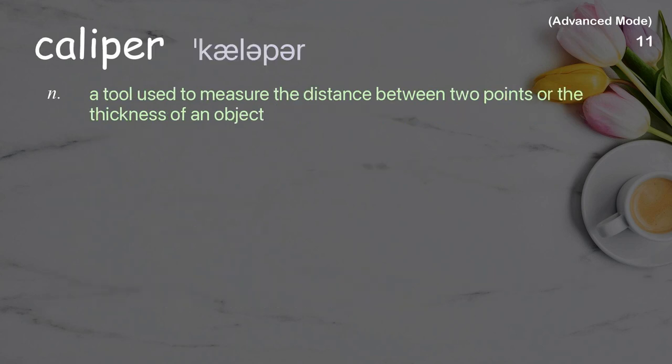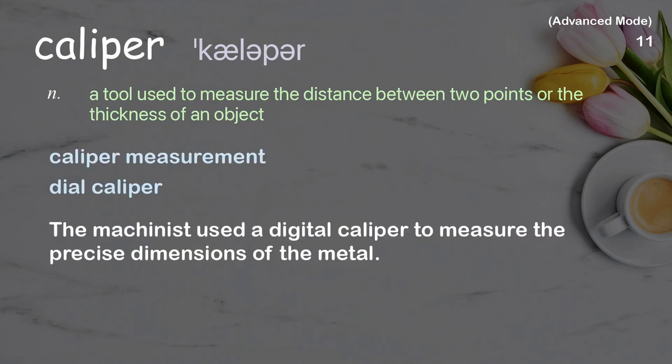Caliper: A tool used to measure the distance between two points or the thickness of an object. Examples: Caliper measurement. Dial caliper. The machinist used a digital caliper to measure the precise dimensions of the metal.